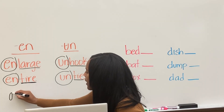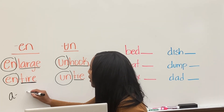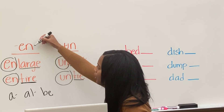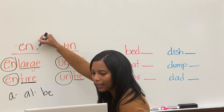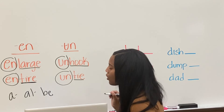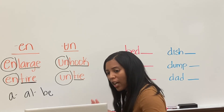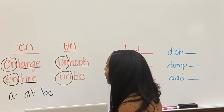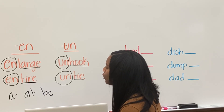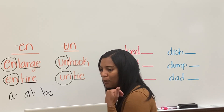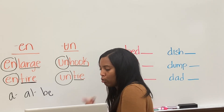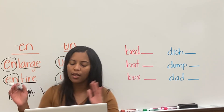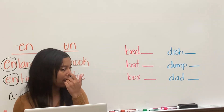So we've learned A that says 'a,' A-L that says 'all,' B-E that says 'B,' and now we know E-N and U-N — 'un.' So those are the five prefixes. We won't learn any more prefixes; these are the only ones we are going to learn. A prefix goes at the beginning of a root word, so we circle the prefix and underline the root word. Good job, guys.